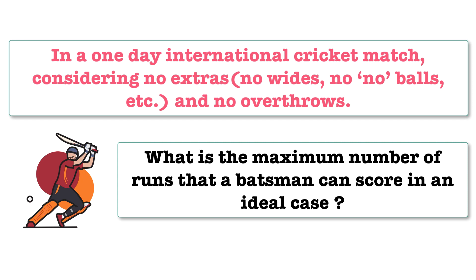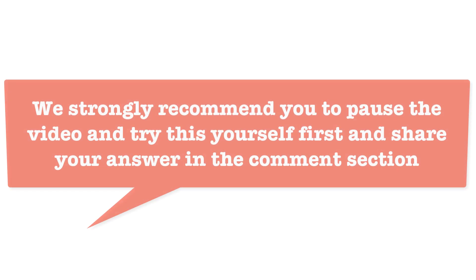Note here, we assume an ideal and slightly practical scenario. We assume that a batsman cannot run for more than three runs in a ball, as otherwise there is no limit — he can theoretically run infinite runs in a ball as long as the opposite team does not catch the ball. So we are assuming that the maximum runs a batsman can run is three runs per ball. We strongly recommend you pause the video and try this yourself first, and share your answer in the comment section.